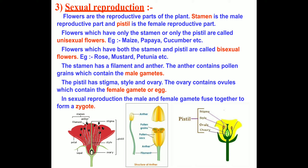The pistil has stigma, style, and ovary. This is the female reproductive part of the flower. The ovary contains ovules which contain the female gamete or egg. In sexual reproduction, male and female gametes fuse together to form the zygote, as you can see in this figure.